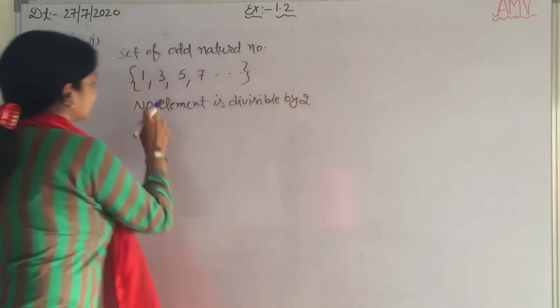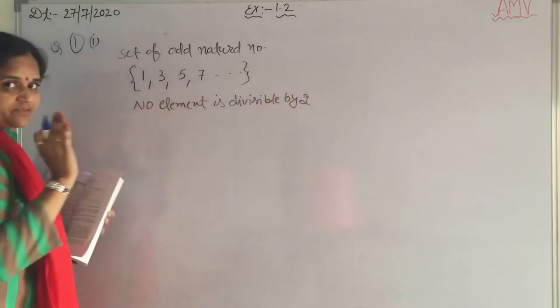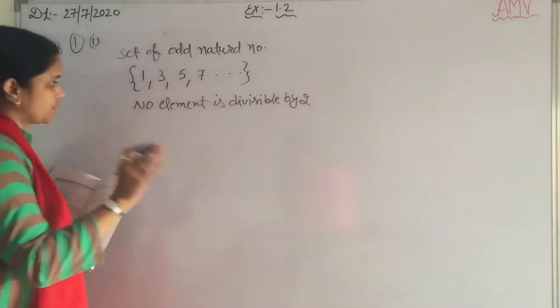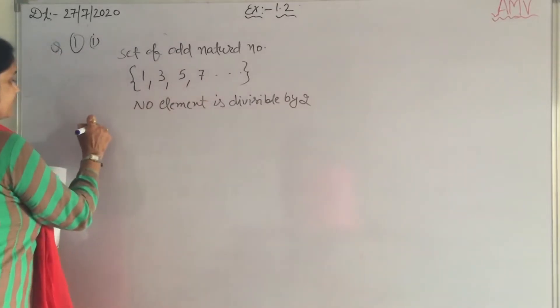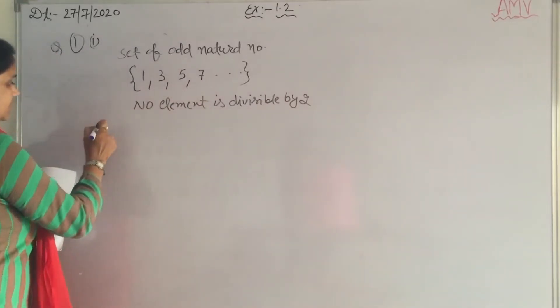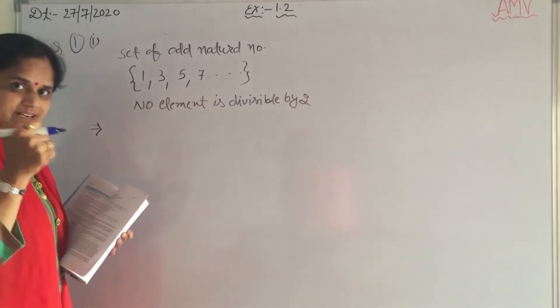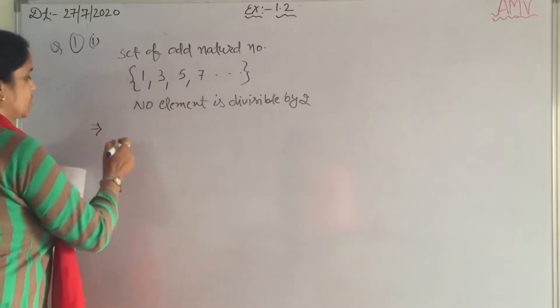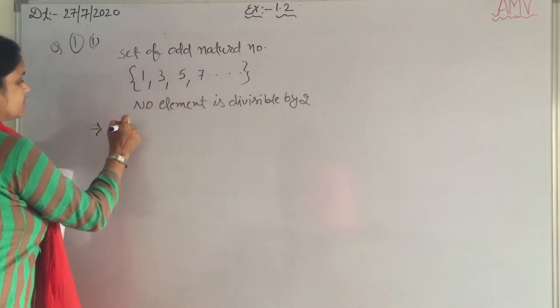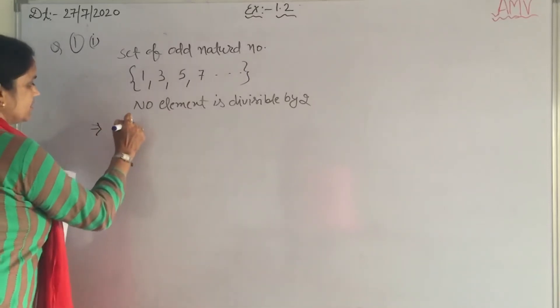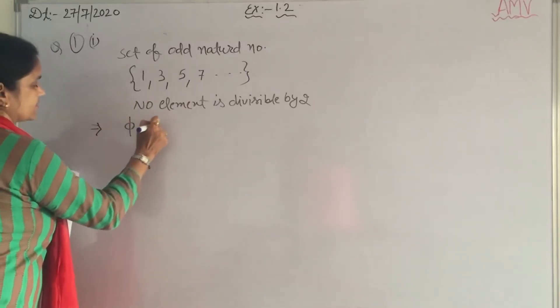No element among odd natural numbers is divisible by 2. No one is divisible by 2. Therefore, the given set is a null set.